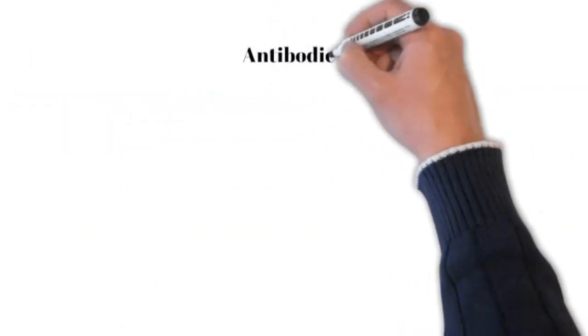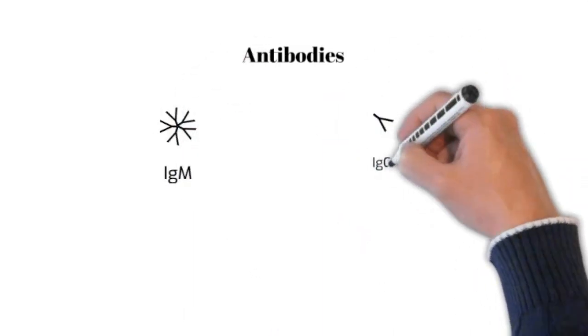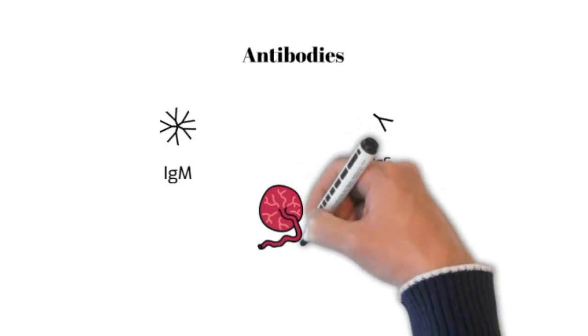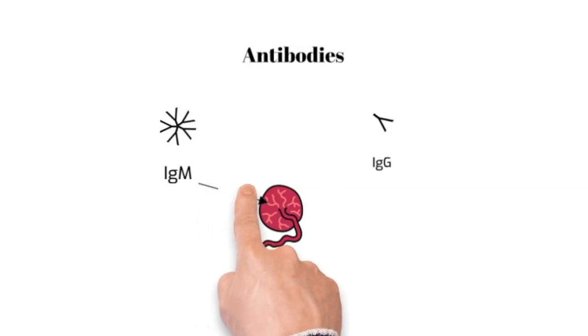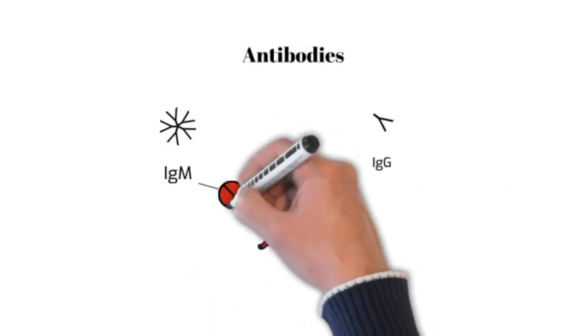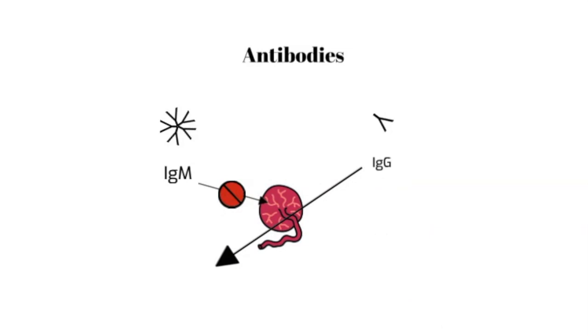This is a good place to review two types of antibodies that our body can produce. The first type is called IgM and the second type is called IgG. IgM antibodies are big and do not cross the placenta. On the other hand, IgG antibodies are small and therefore can cross the placenta.